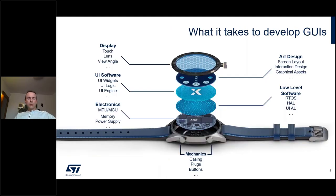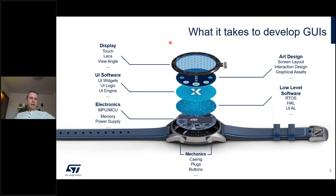Taking the example of a smart watch — a simple one to demonstrate — a GUI application can be cut into several layers, starting from the display itself. ST cannot bring you displays as they don't produce any, but they can help connect you with partners that can help you pick the right display. Underneath is the art design — graphic elements visible to the end user — which you can handle in-house or with external companies that can create icons and animations to make your interface attractive.